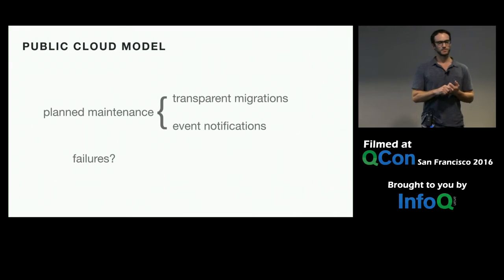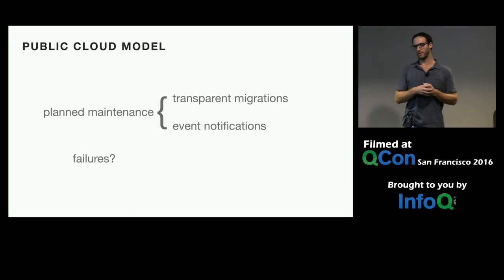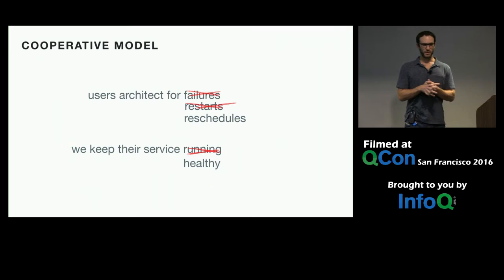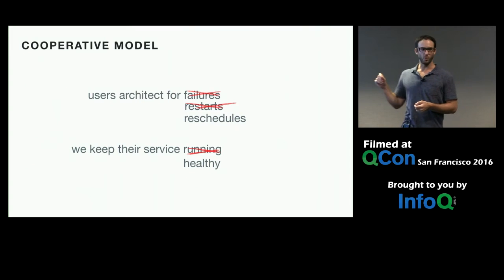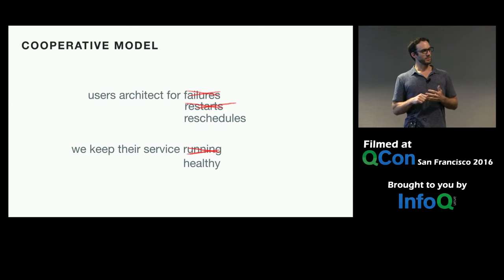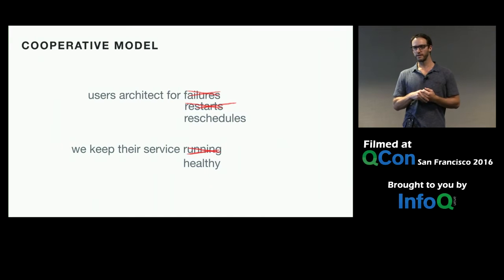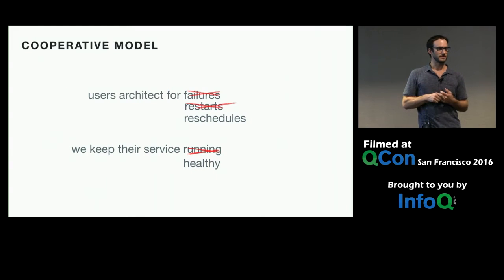Inside Twitter we think of things differently. We try to come up with a cooperative model where there's a model of the platform that users have to accept and buy into. The first key part is that users have to architect for the instances of the service being rescheduled — not failures, but rescheduling. It's not about restarts either, because we can't guarantee they will restart on the same host. The only guarantee is that we'll reschedule instances of your service somewhere else in the cluster.